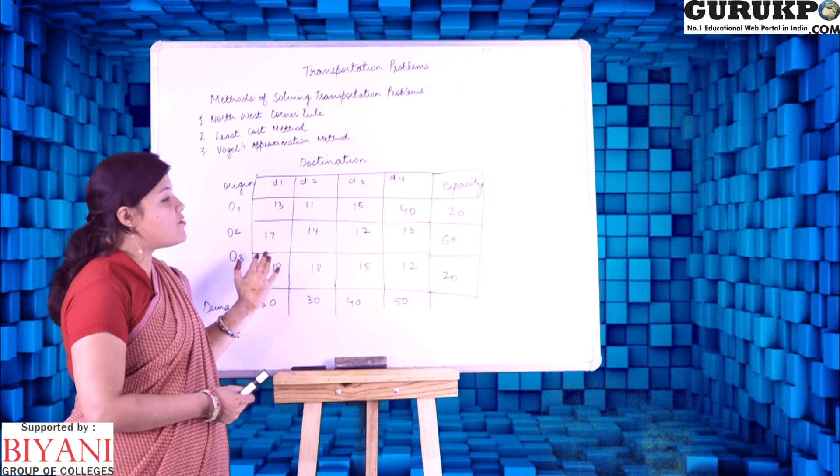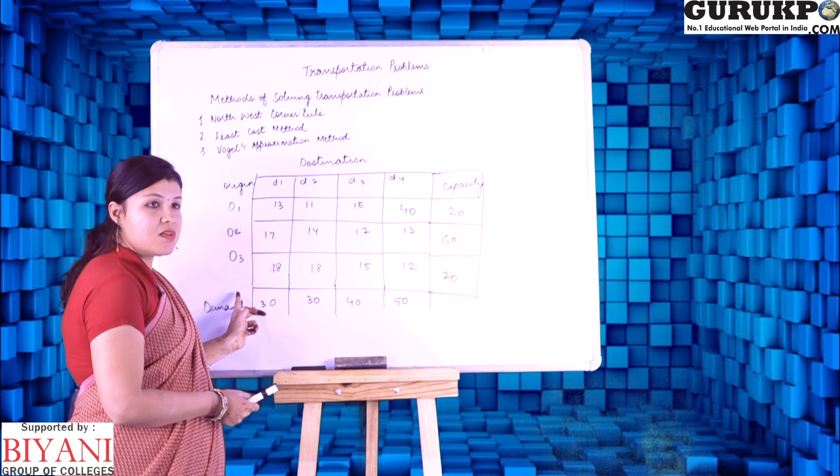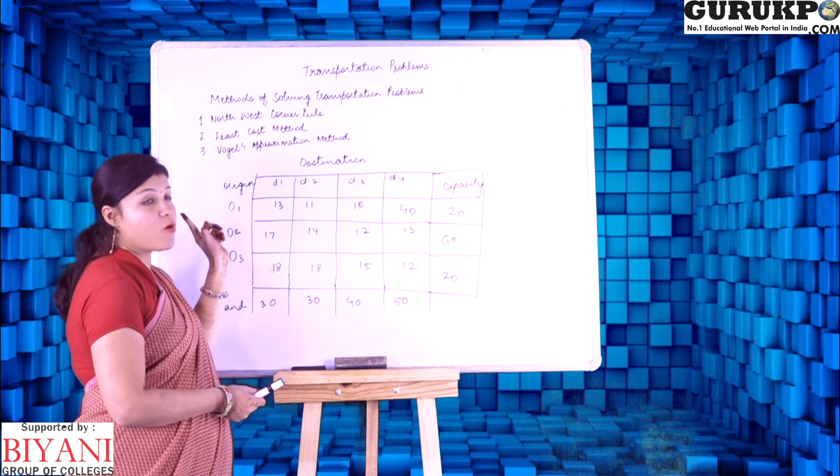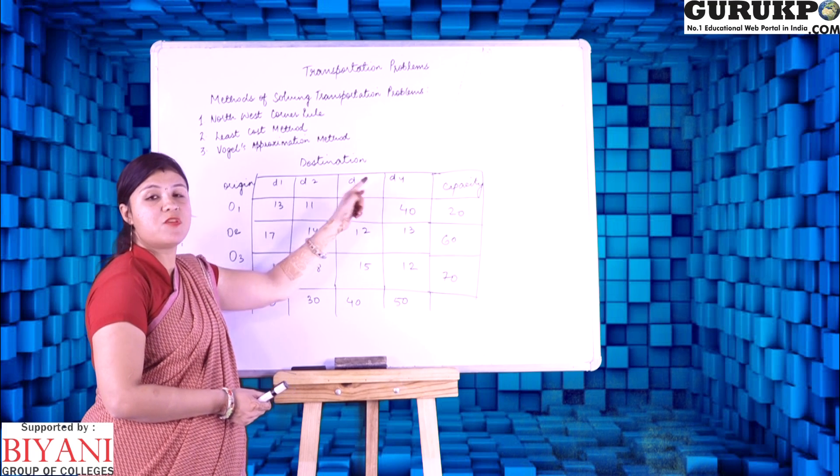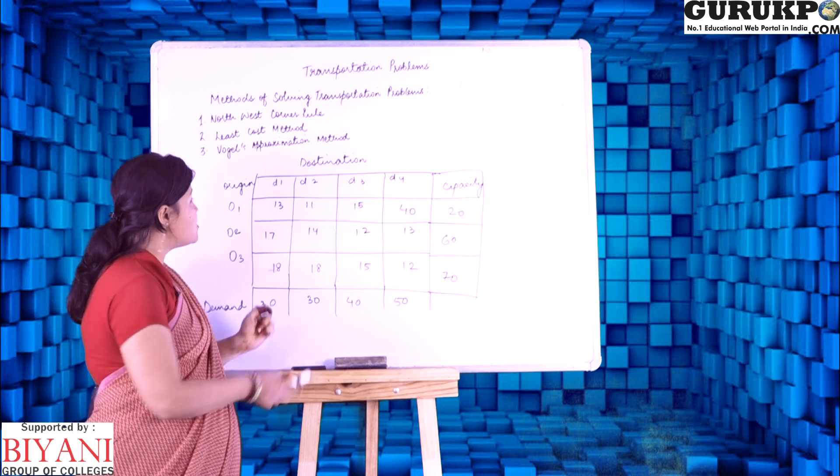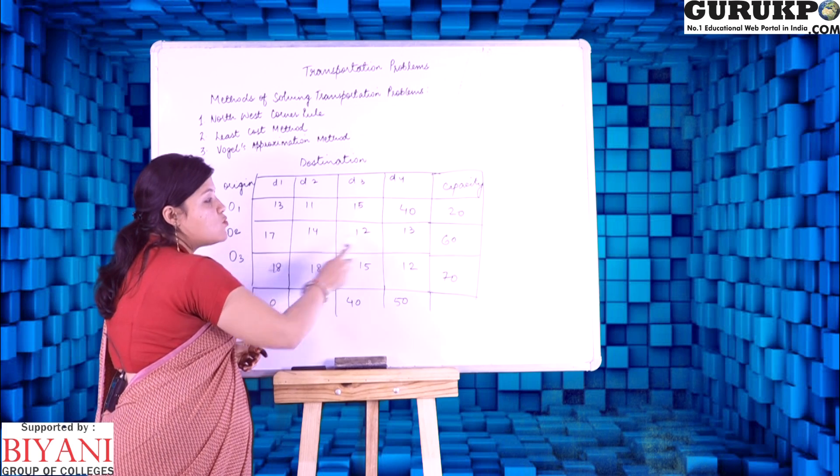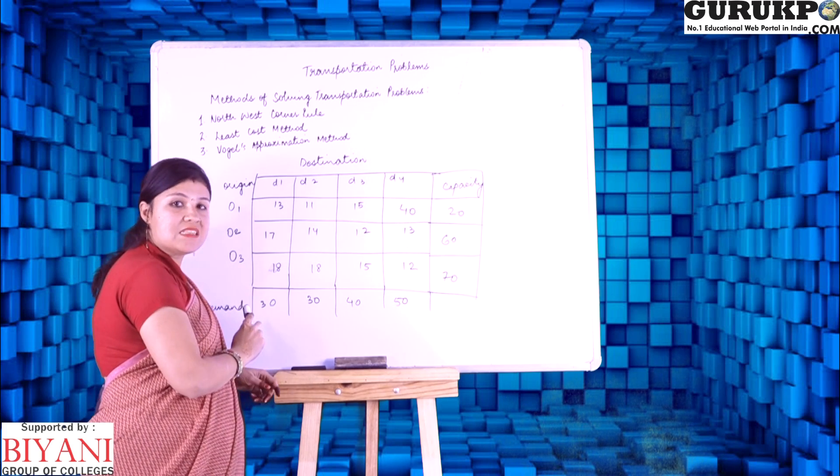Now, first have a look at the matrix. These are the origins, that is the points from where we have to supply the items, and these are the destinations where we have to supply the items. These are the cost, individual respective costs from each origin to the destination.